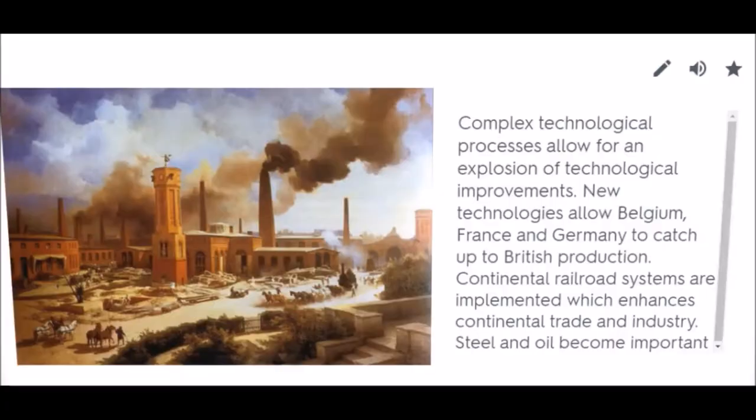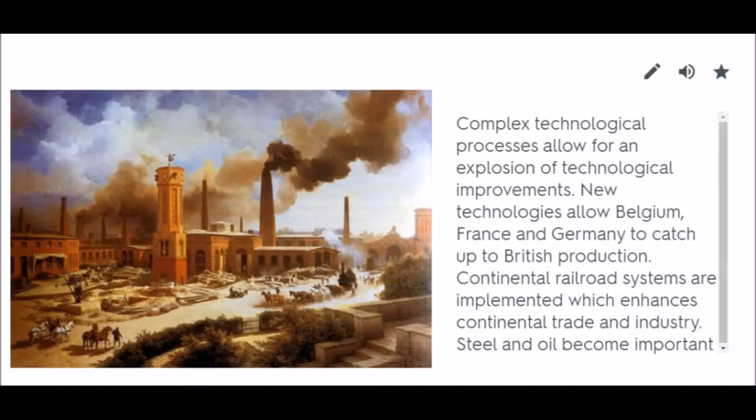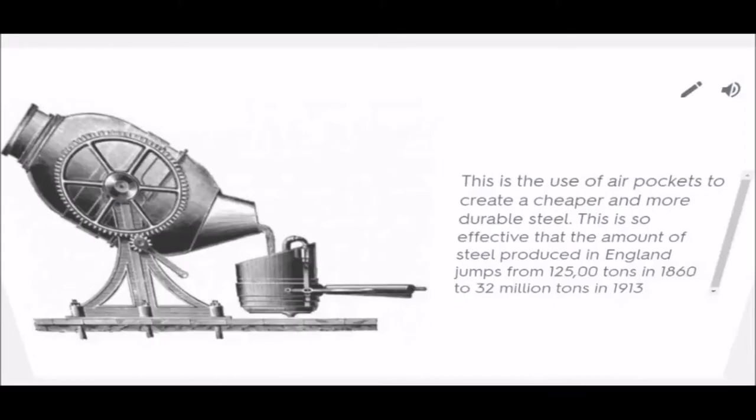Second Industrial Revolution: Complex technological processes allow for an explosion of technological improvements. New technologies allow Belgium, France, and Germany to catch up to British production. Continental railroad systems are implemented, which enhances continental trade and industry. Steel and oil become important. The Bessemer Process is the use of air pockets to create cheaper and more durable steel.